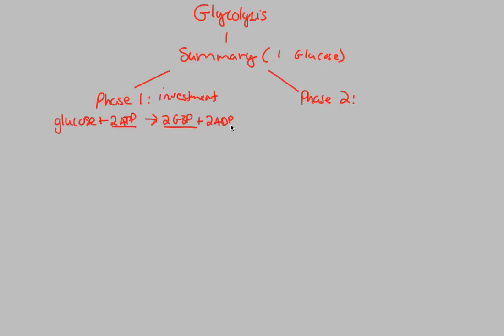In phase 2, this was our payoff phase, we had a little bit more of a complicated reaction going on here. What we did was we took the two G3P molecules gained from what? Gained from our investment phase. We combined them with two NAD+ molecules because, remember, we had to undergo what type of reaction? A dehydrogenation reaction.